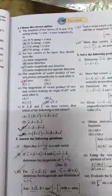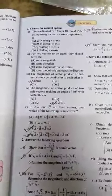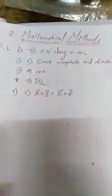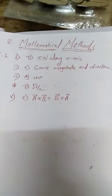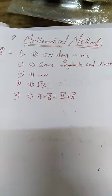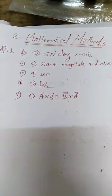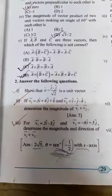Hello friends, good morning or good afternoon. In this first video I will discuss 5 MCQs. The answers are: 5 Newton along x-axis, same magnitude direction, 0, root 3 by 2, and vector a cross vector b is equal to vector b cross a which is wrong.